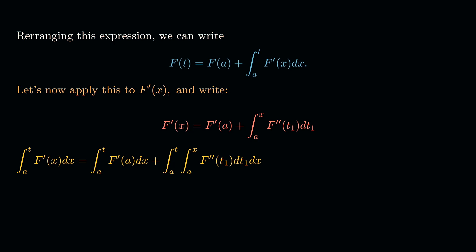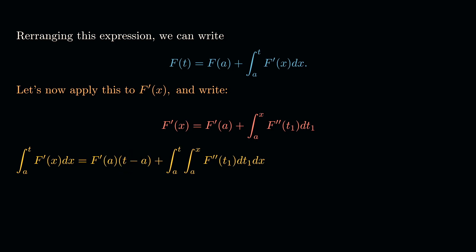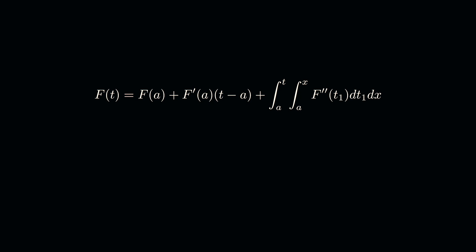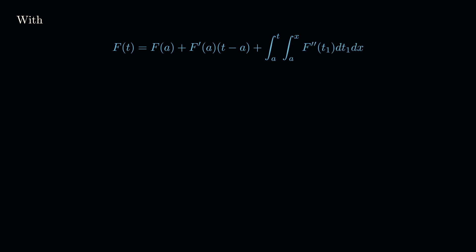Since f'(a) is just a constant, we can pull it out of the integral. The integral from a to t of dx is simply t minus a. So we can simplify to: f(t) equals f(a) plus f'(a) times (t minus a), plus the integral from a to t of the integral from a to x of f''(t₁) dt₁ dx.